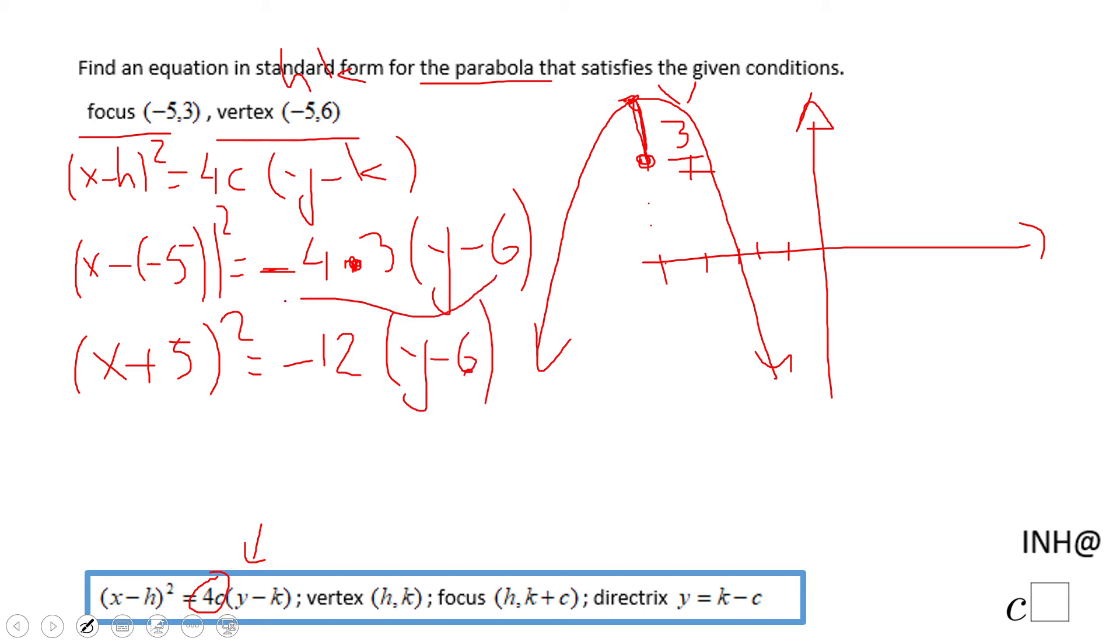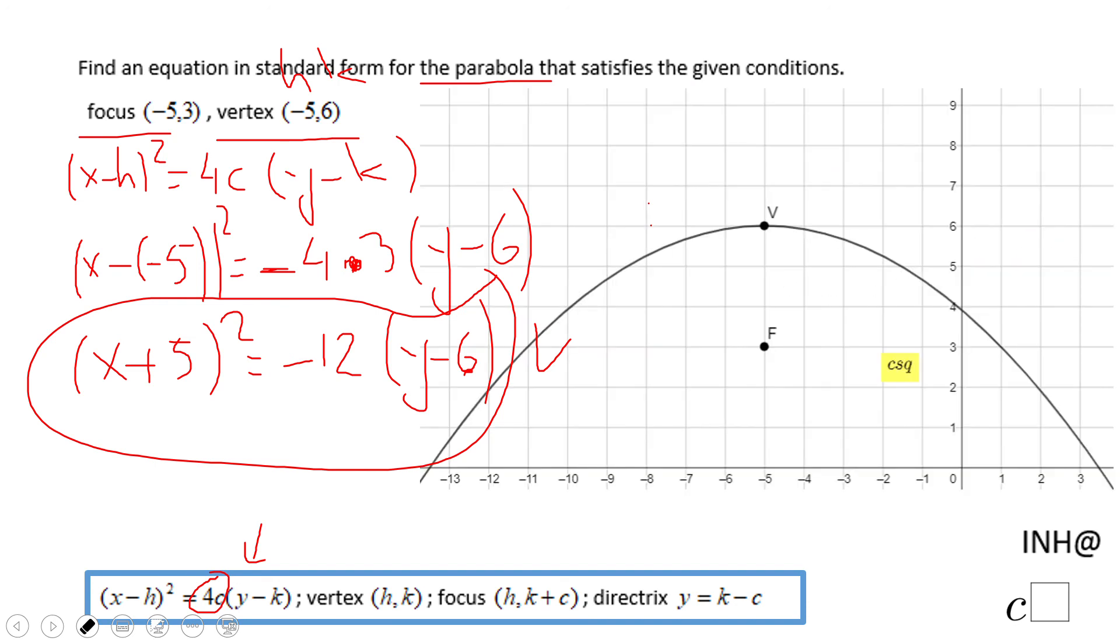This is the equation of a parabola that has the focus at (-5, 3) and the vertex at (-5, 6). You see it right here.